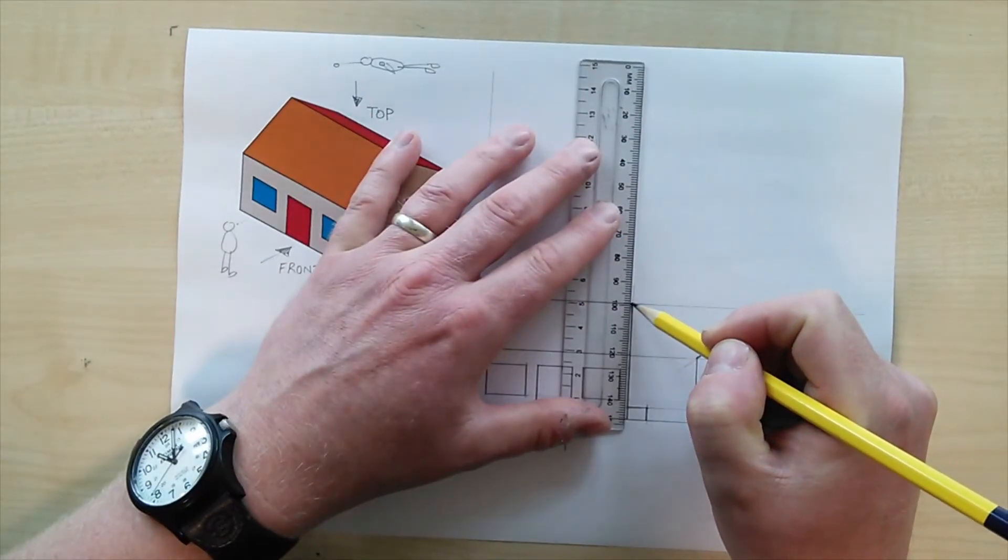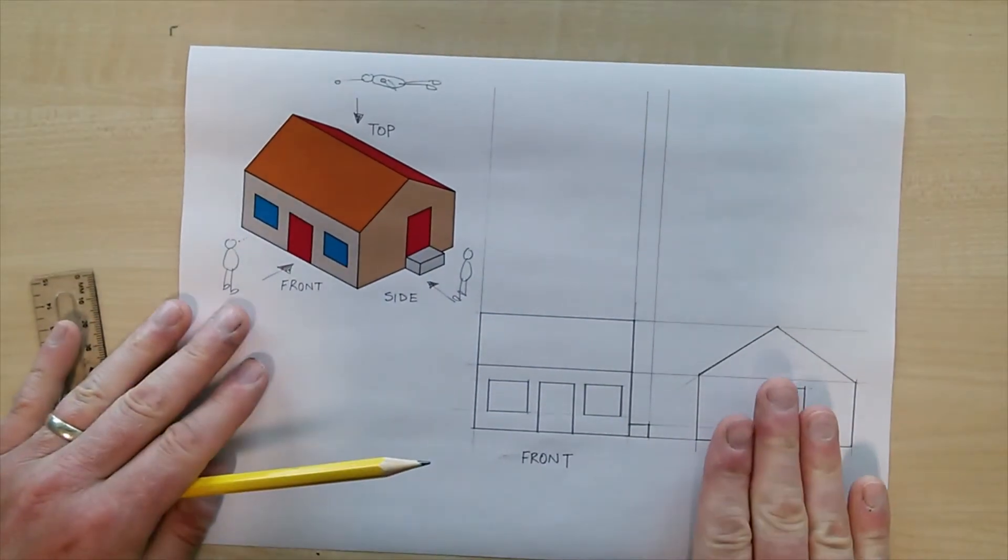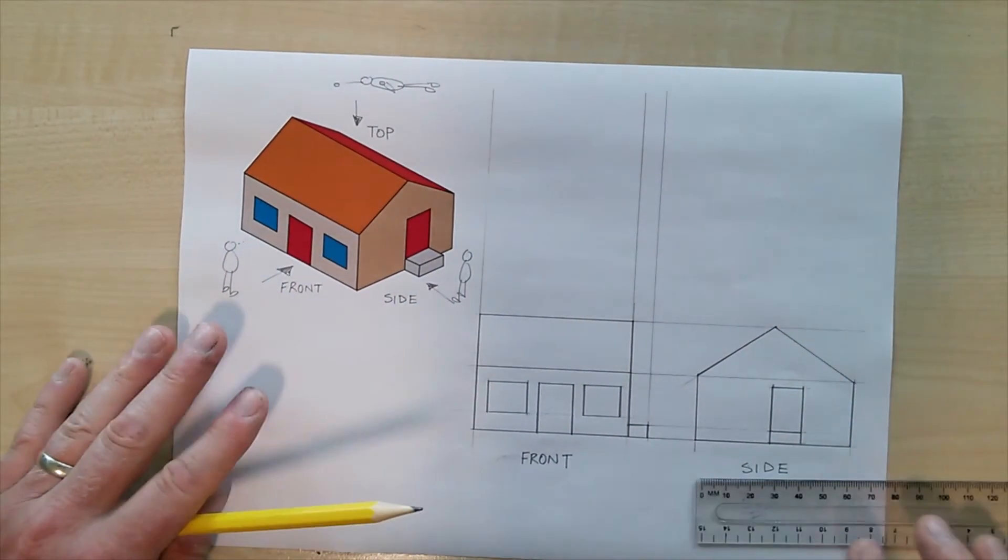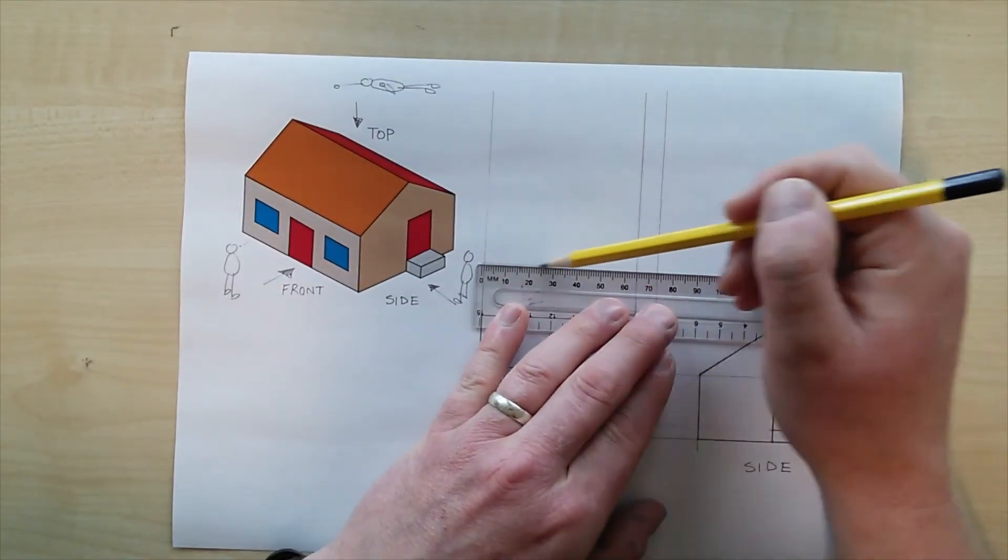And again we're going to use construction lines here. I'm going to make use of the sizes that we've already figured out for the front view, I'm going to transfer those sizes up. Now at this stage I'm trying to figure out the width of the side and I noticed that it was about four fingers long.